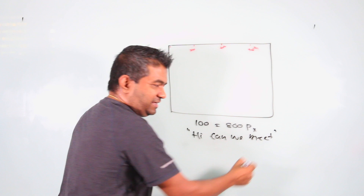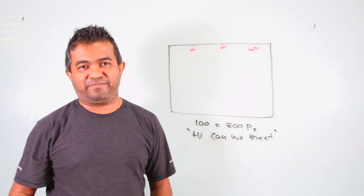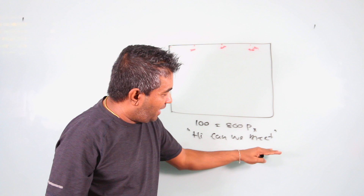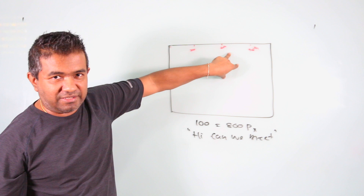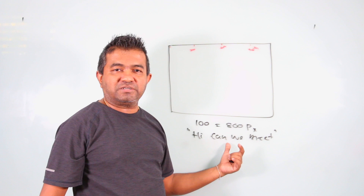You can also add another layer of security by encrypting the message first. Encrypt the message to get ciphertext, then embed that encrypted text into the image. Even if someone extracts the message from the image, they won't be able to read it because it's encrypted.